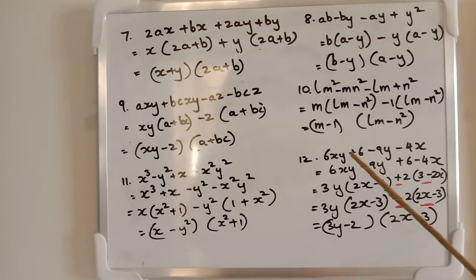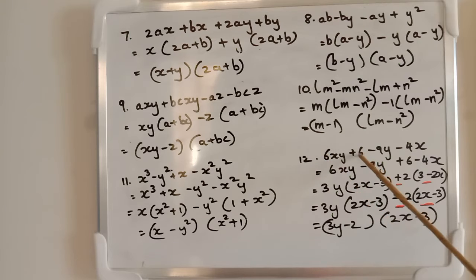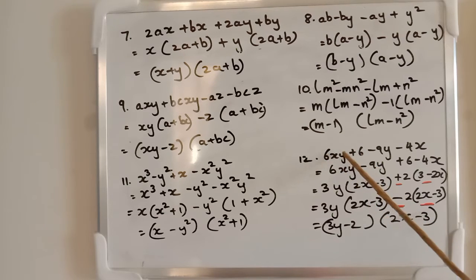A similar type is the next question number 12: 6xy + 6 - 9y - 4x. Now, if we had done just 6xy + 6, you will get common factor 6. But inside you will be xy + 1. Over here there is no xy. So you can't group them this way.